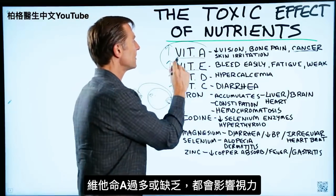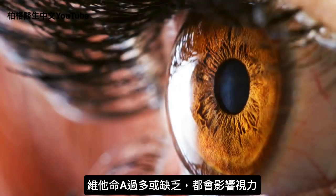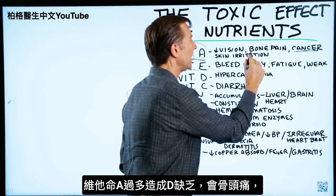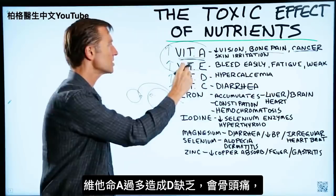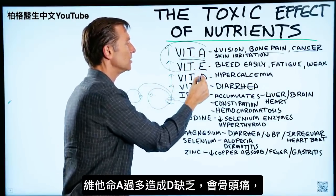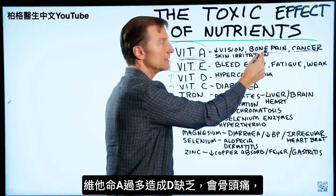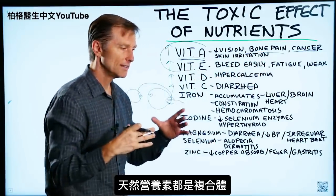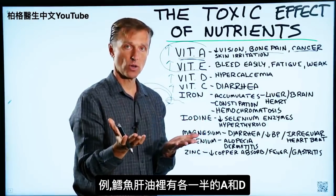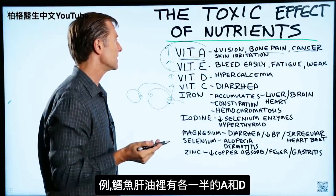If you have too much vitamin A, it will impair your vision — which is interesting because a deficiency in vitamin A also impairs your vision. You also get bone pain, probably because of the relationship between vitamin A and vitamin D: too much vitamin A depletes vitamin D, causing bone pain. This is why in nature, these nutrients always come in complexes. Cod liver oil, for example, contains vitamin A and vitamin D together in roughly a 50-50 split.